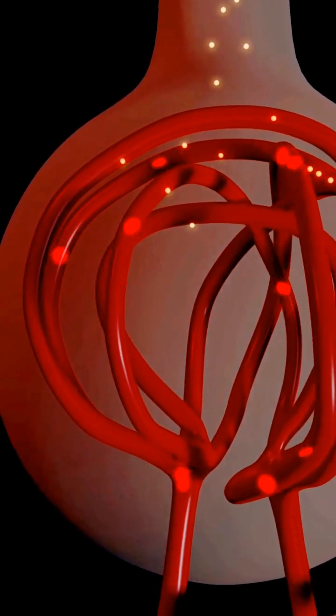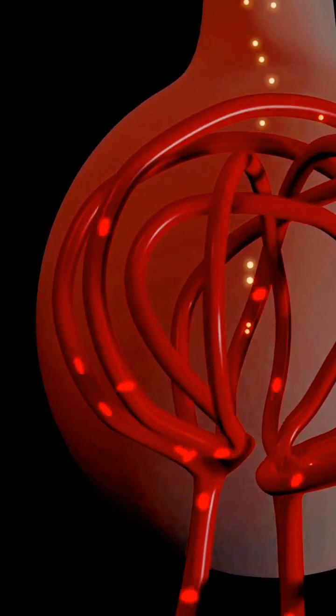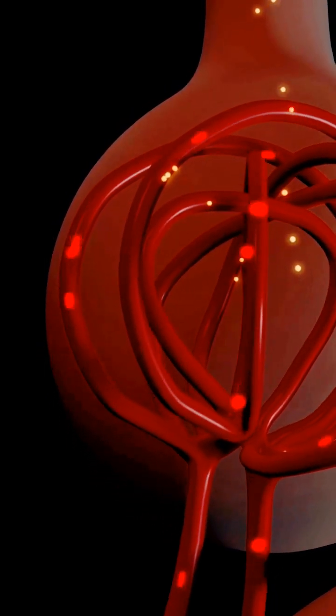Urea is removed from the blood by the kidneys via microscopic filtering units known as nephrons. Each nephron is made up of a glomerulus, which is a ball of small blood capillaries, and a renal tubule, which is a small tube.